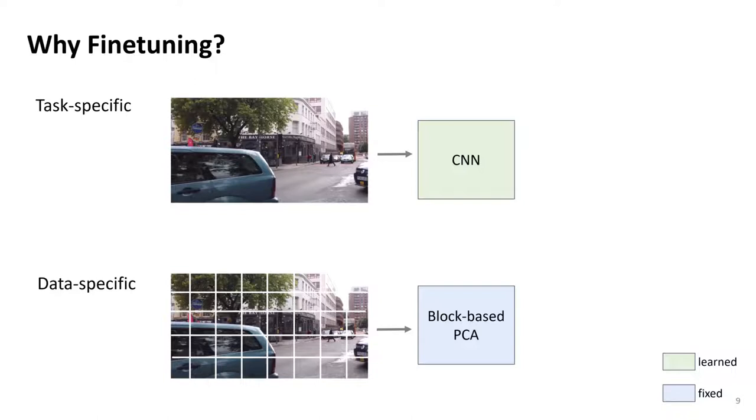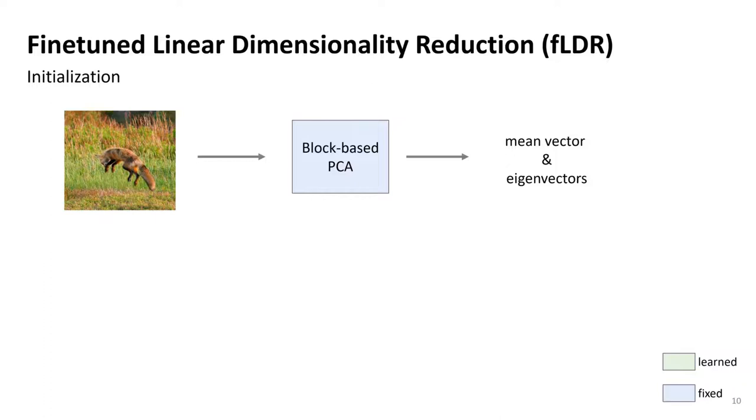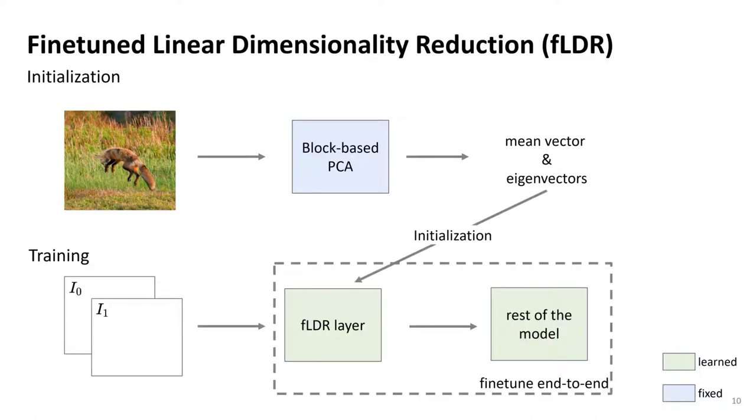We therefore propose to fine-tune the original computed parameters to make them task-specific. More specifically, before we start our training, we take a random image from the training dataset and apply a block-based PCA transformation. We then use a portion of the eigenvectors and the mean vector to initialize the parameters of the dimensionality reduction layer. After the initialization step, the mean vector and the eigenvectors are treated as trainable parameters, which are optimized for the task of frame interpolation.